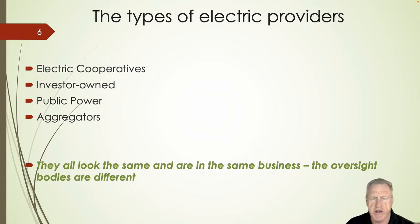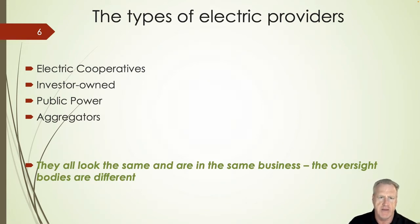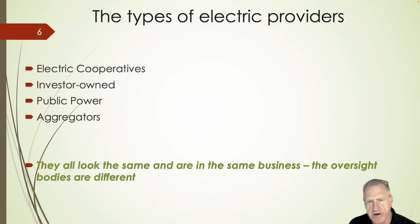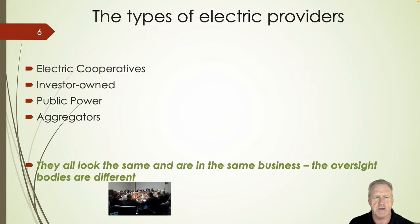In some states — Texas, Illinois, and others — you can choose your electric provider. Companies will try to sell you electricity by using the wires of the local distribution utility; they aggregate customers, buy the power, and sell it to you with a markup. We call those aggregators. Open-access states have these options, and while they're a minority of states, they're gaining traction in some areas. But all of these providers — co-ops, investor-owned, public power, and aggregators — are in the same business.